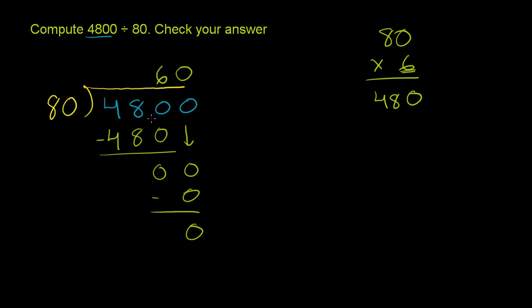When the dividend is 4,800, the divisor is 80, then our quotient is 60. Now, they want us to check our answer.